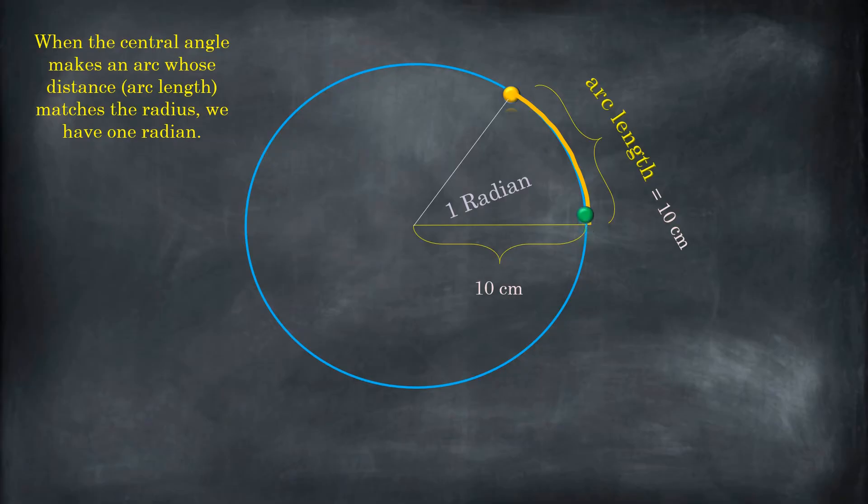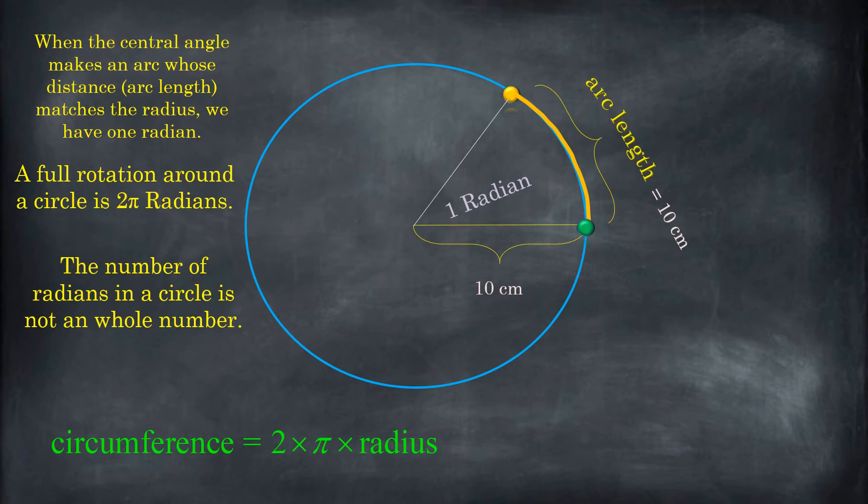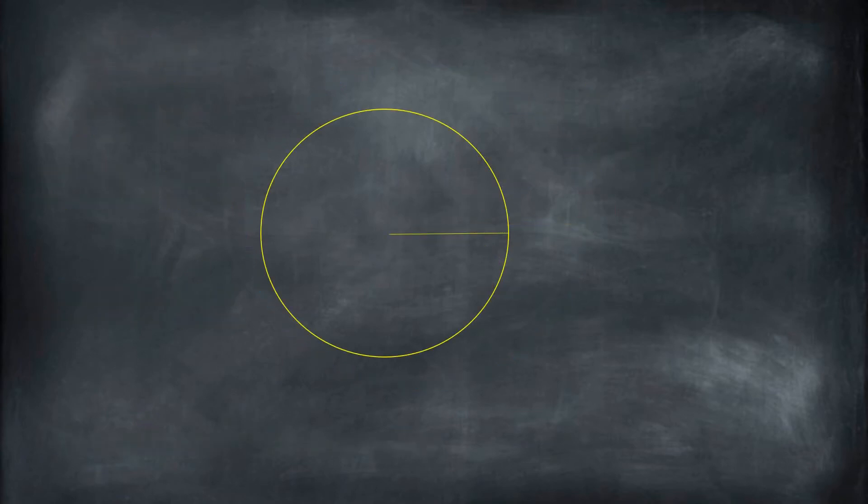Now when you go all the way around the circle, what ends up happening is that you have two pi radiuses, that distance. So there are two pi radians in a full circle. And it's a little tricky and confusing because the number of radians in a circle is not a whole number.